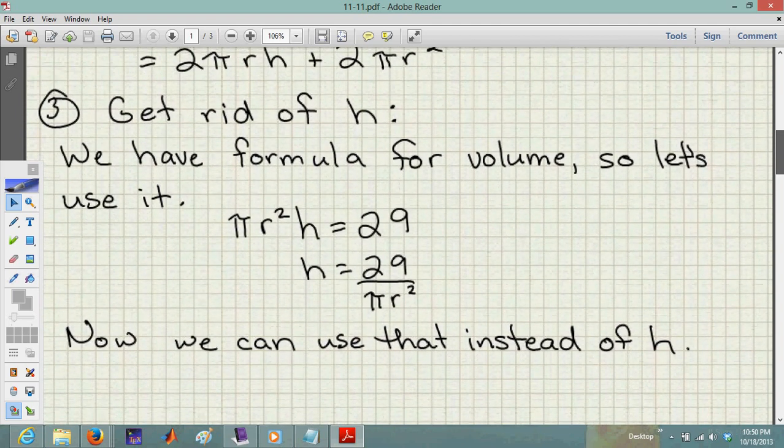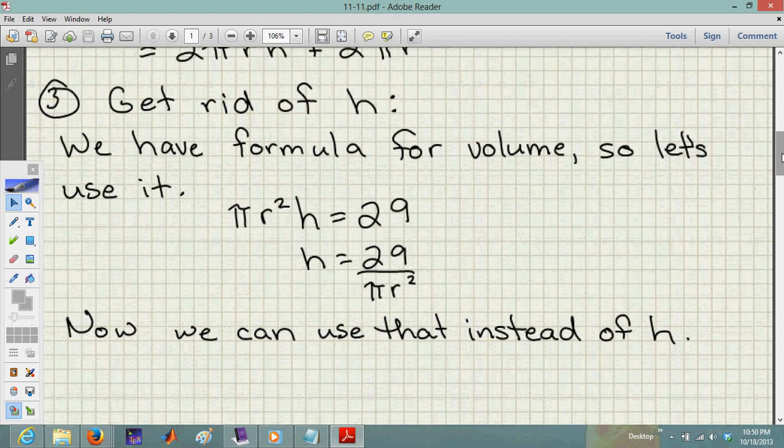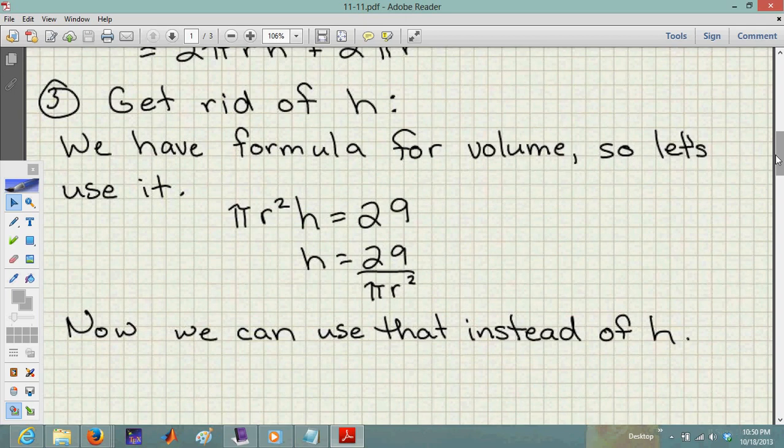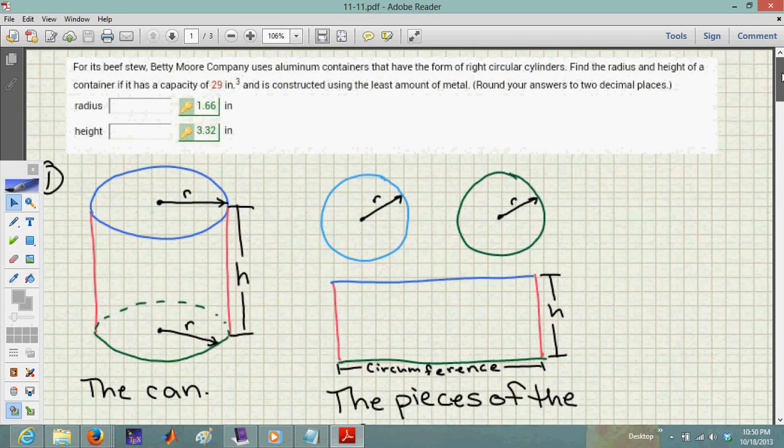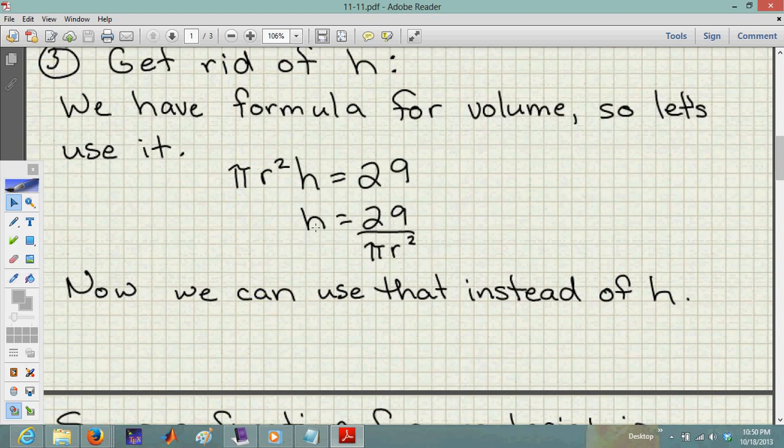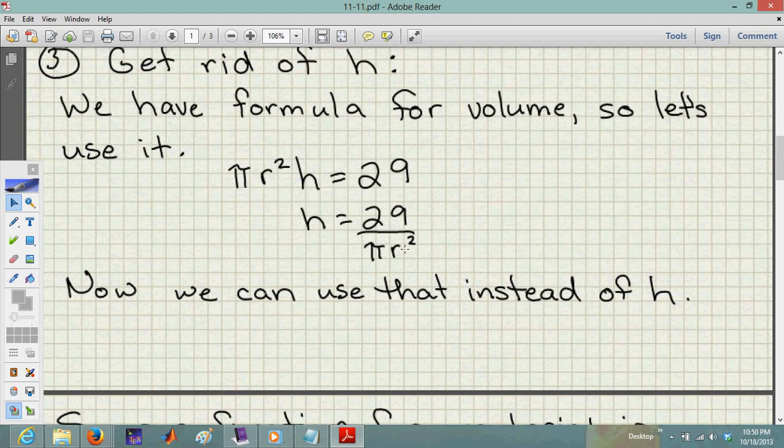Next we need to get rid of h. We want our function in terms of r only. We can do that using the volume formula. The volume of the can is the base times the height, so πr²h = 29. Rewriting in terms of h gives h = 29/(πr²). Now wherever we see h in the formula, we can replace it with 29/(πr²), and we don't have h in the formula anymore.